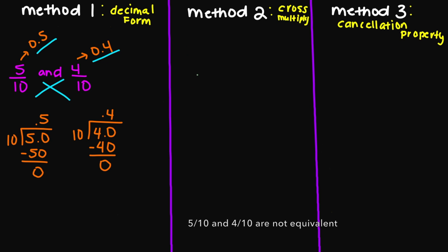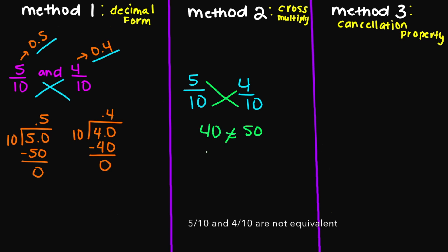Let's look at method number two. So 5 over 10 and 4 over 10, and we're going to cross multiply. 5 times 10 is 50. And then 10 times 4 is going to be 40. 40 does not equal 50. So again, we see that these two fractions are not equivalent.